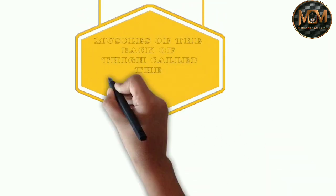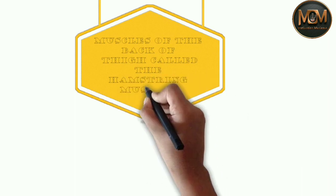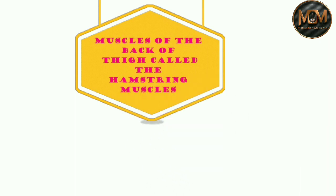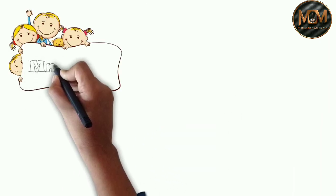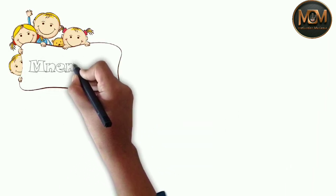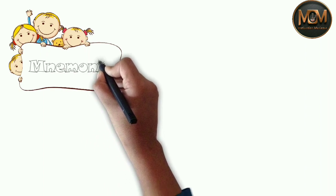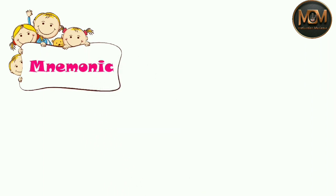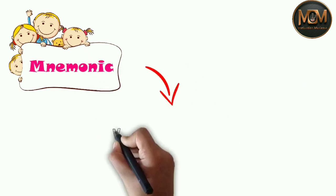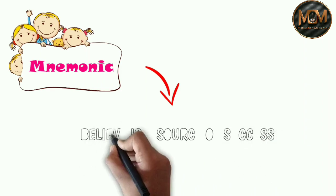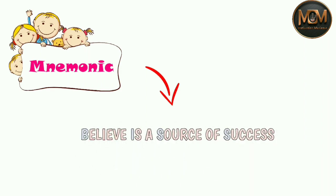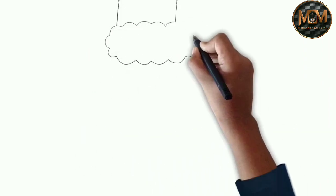The muscles of the back of the thigh are called the hamstring muscles. We have made a mnemonic to learn the muscles of the hamstring: 'Belief is a source of success.'